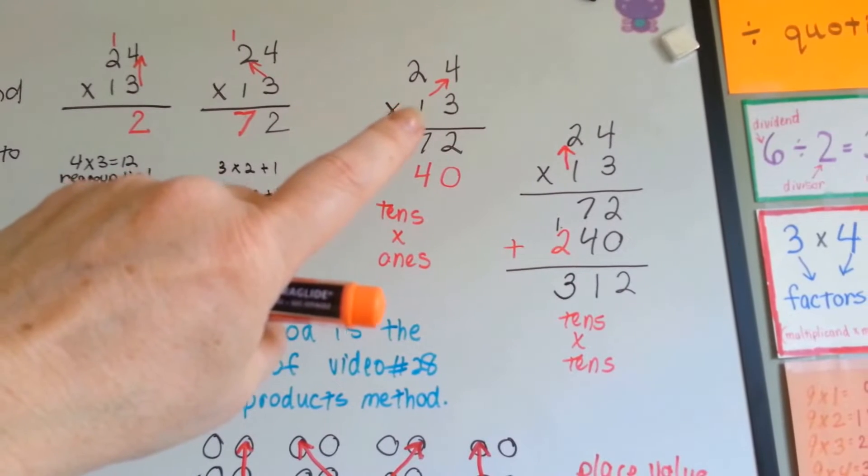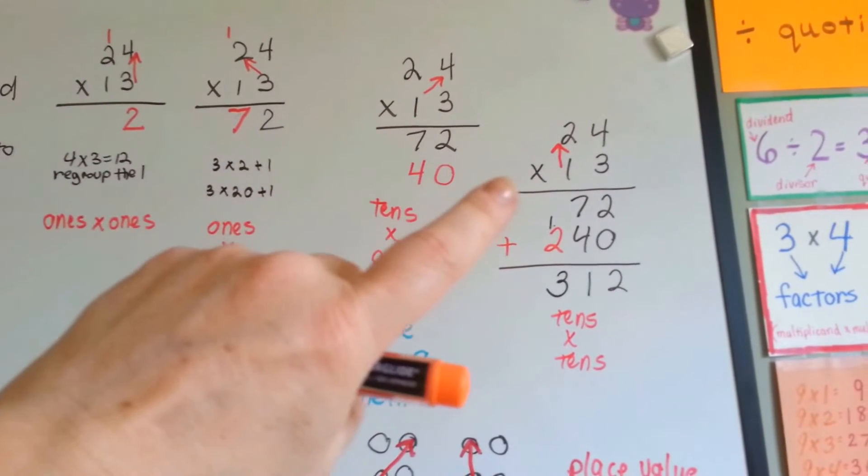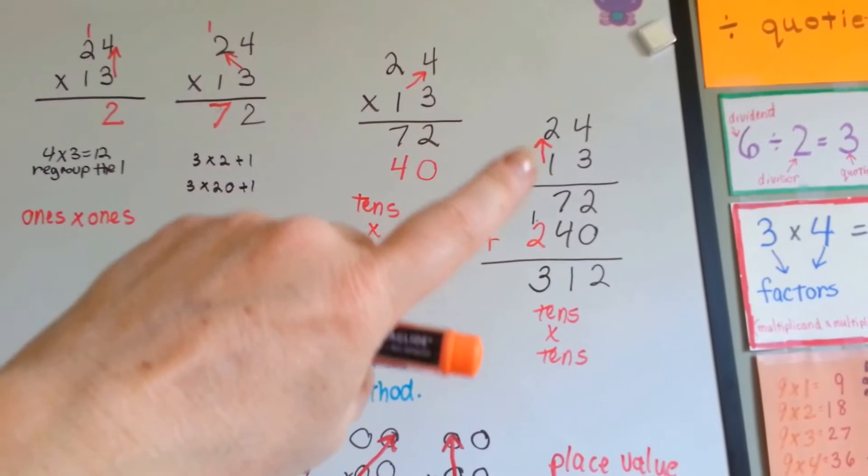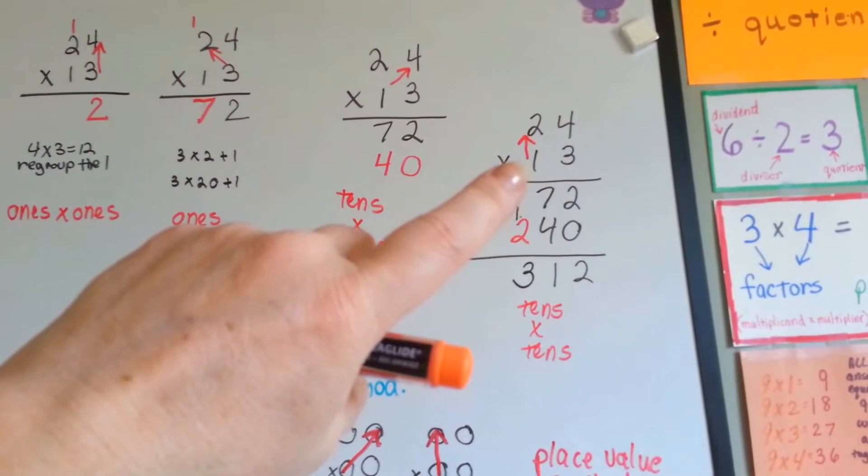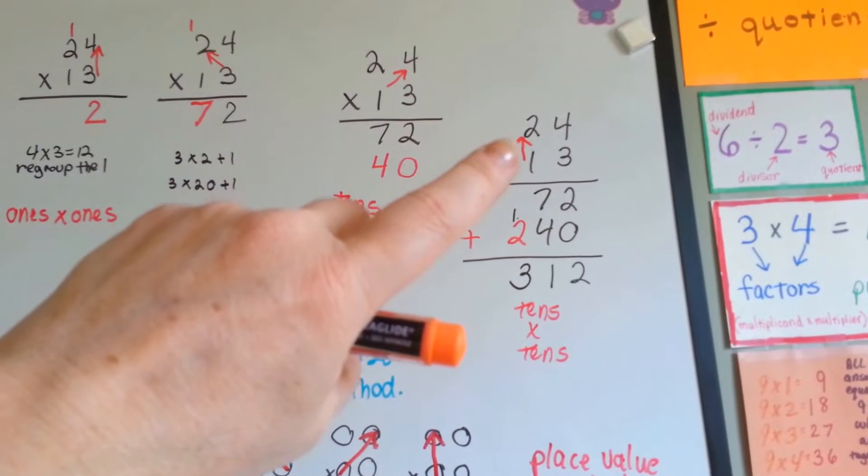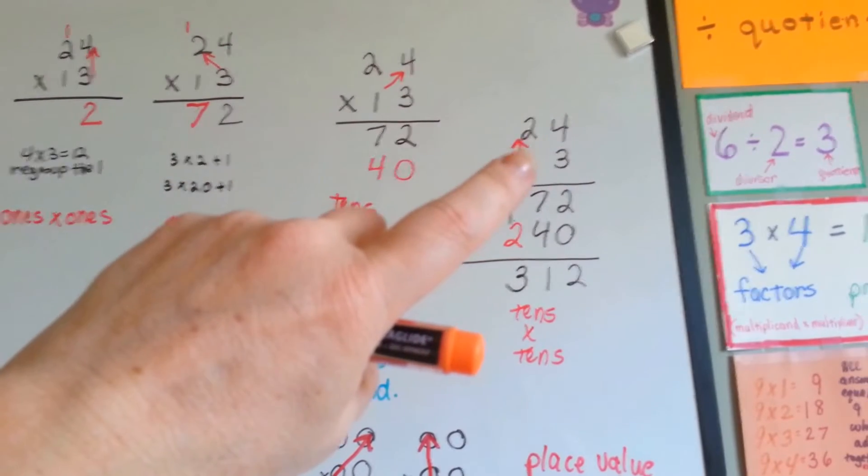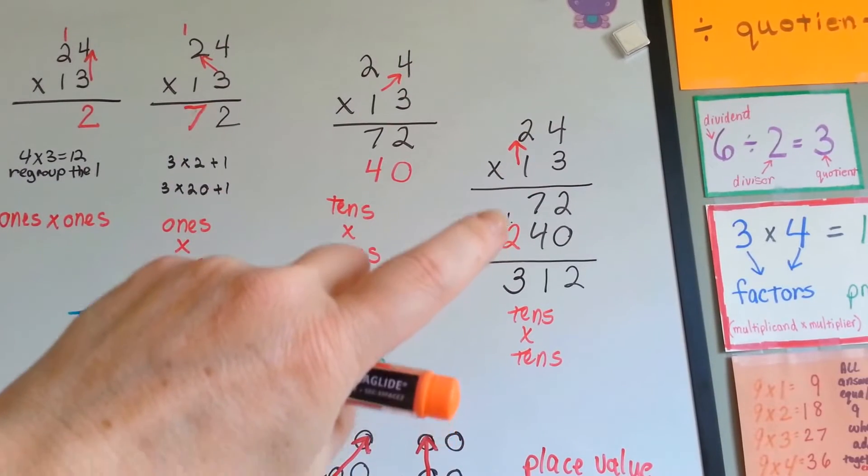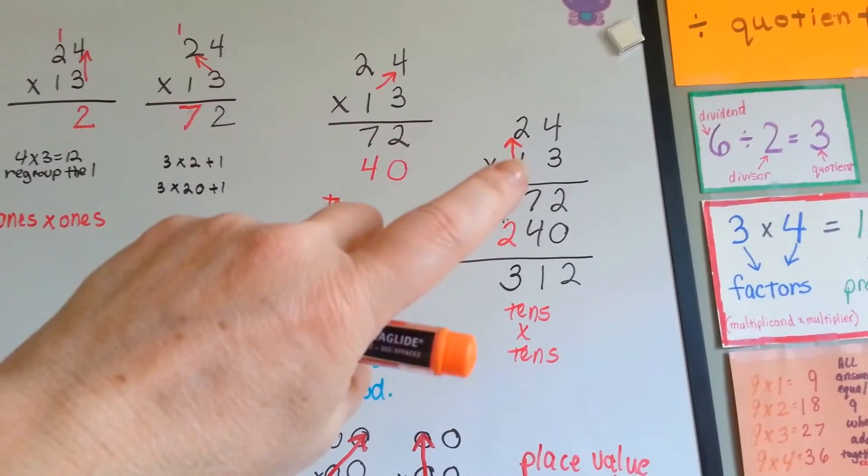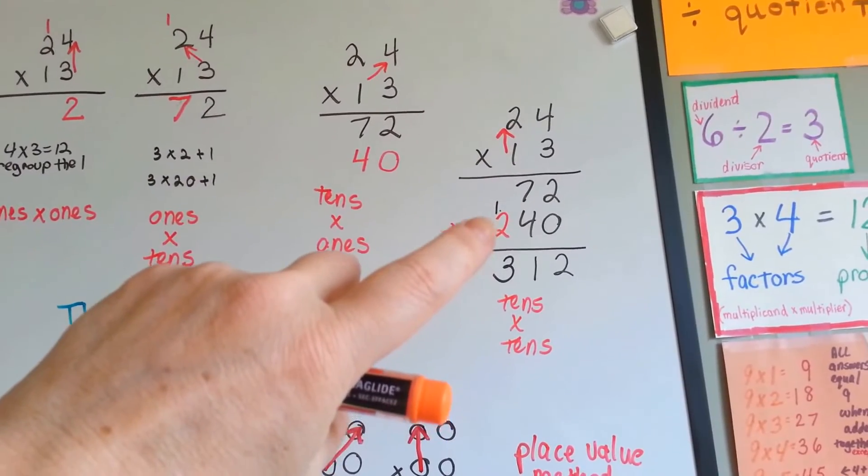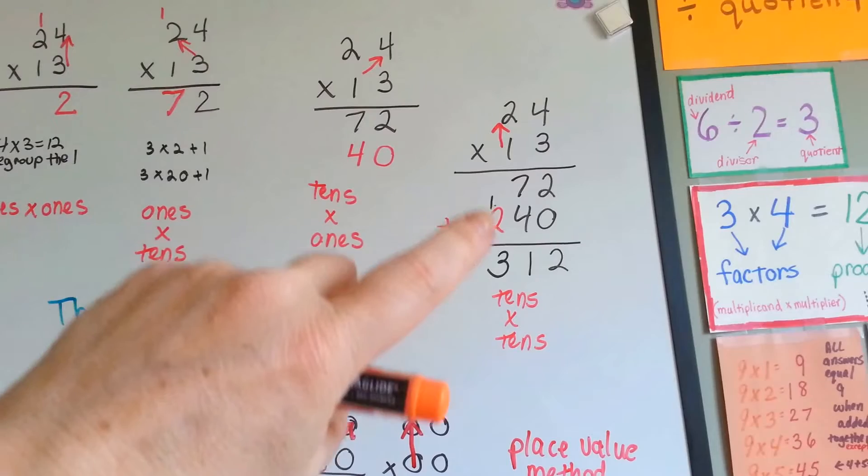Then we're going to do the 1 times the 2, which is actually a 10 times a 20, isn't it? Because it's in the tens place value. 1 times 2 is 2. Keep in mind it's actually 10 times 20, and it's going to go into the hundreds place value, because 10 times 20 is 200. See how it's in the hundreds place value?